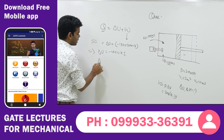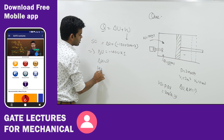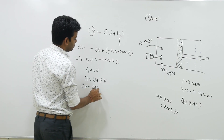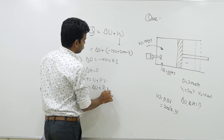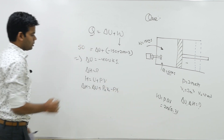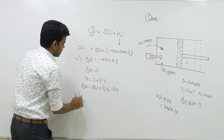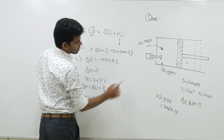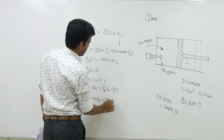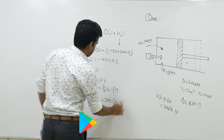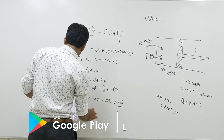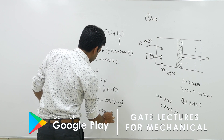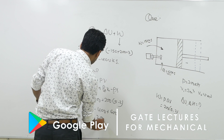Now we determine ΔH. We know that H equals U plus PV, so ΔH equals ΔU plus (P2·V2 minus P1·V1). Since pressure is constant, this simplifies to ΔU plus P·(V2 minus V1). That is minus 400 plus 200 into (5 minus 2), which is minus 400 plus 200 into 3, giving minus 400 plus 600, which equals plus 200 kilojoule.